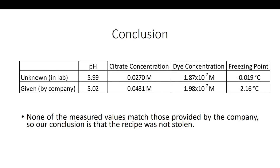Finally, we want to give our conclusion based on the results we found. Here we have summarized our values measured in the lab on the top line, and the values given by the company on the bottom line. As you can see, each of the values is different — our pH, our citric acid concentration, our dye concentration, and our freezing point are all different from the values given by the company. As a result, it is our opinion that the recipe was not stolen, and there is no cause for any sort of legal case in this scenario.